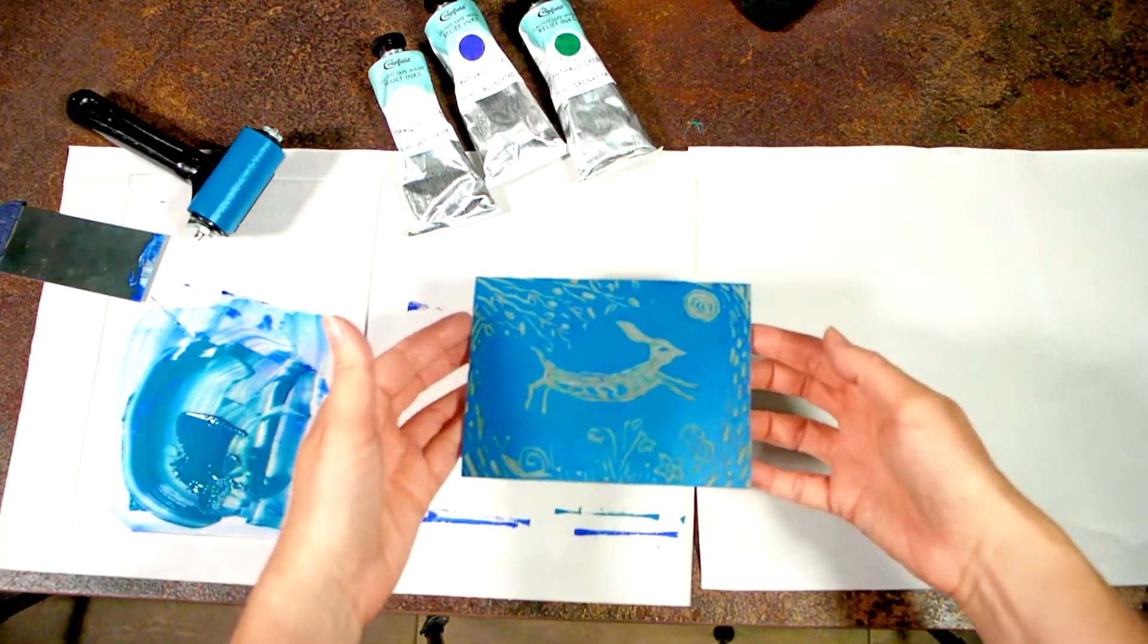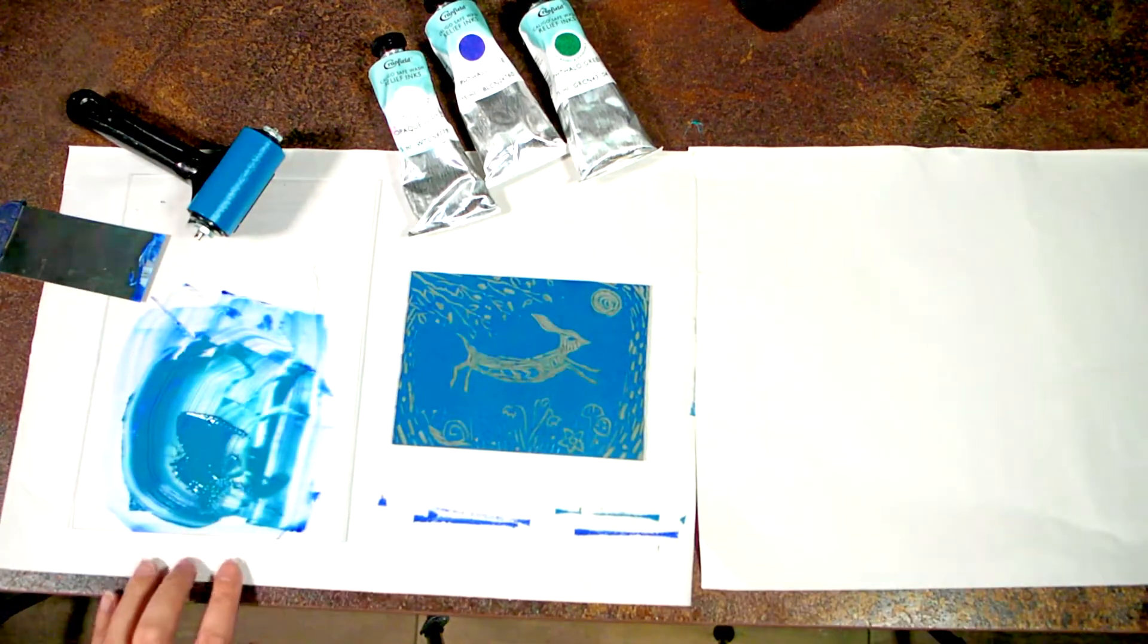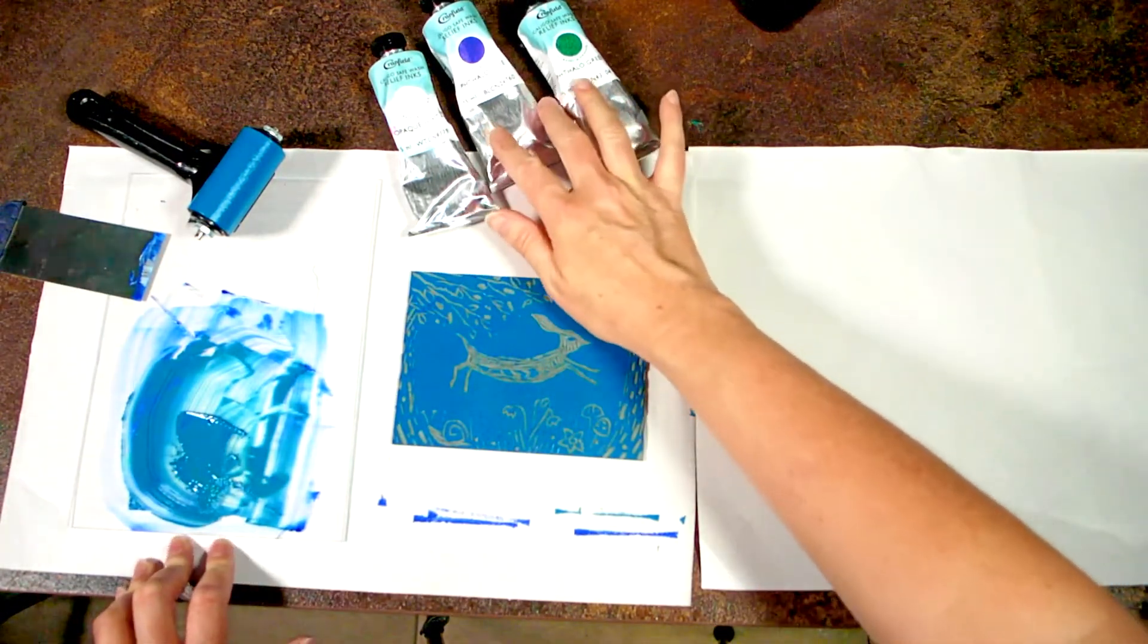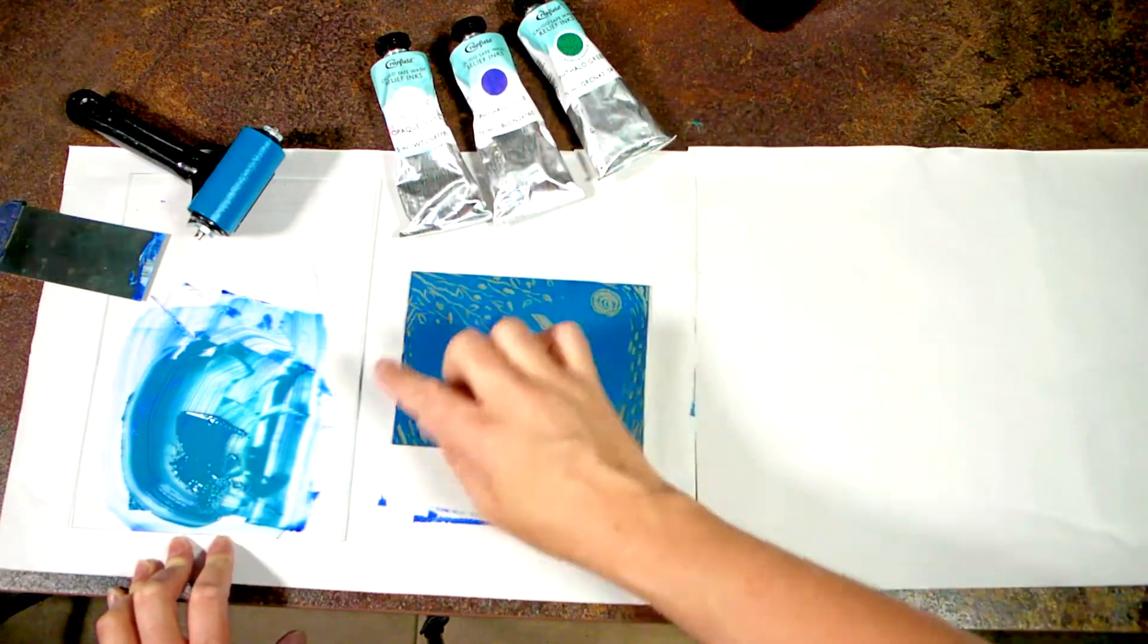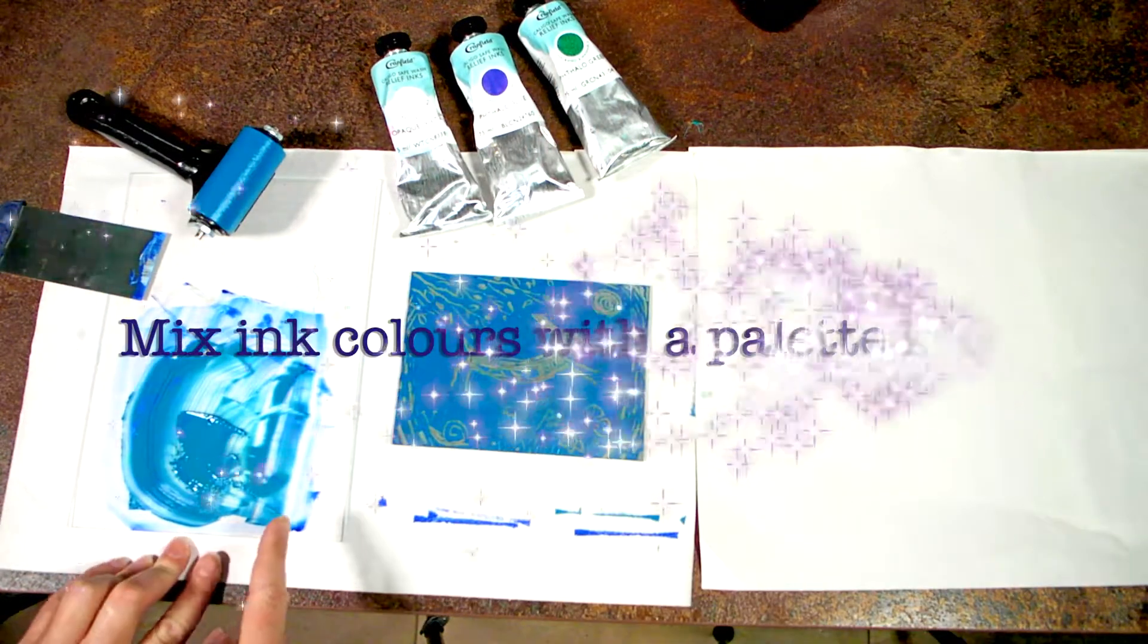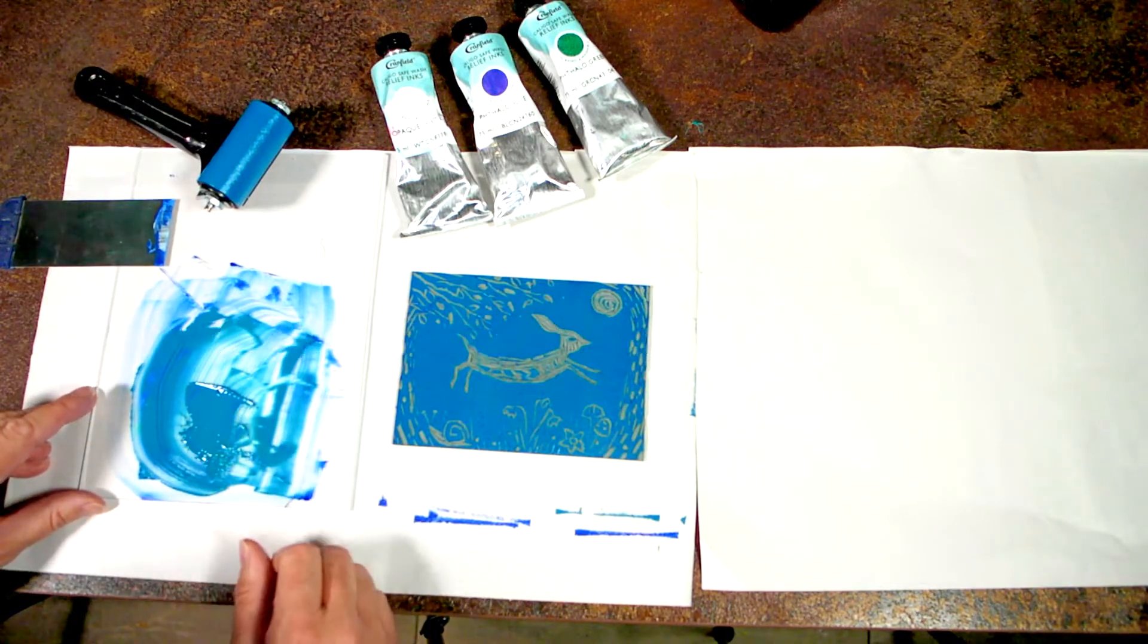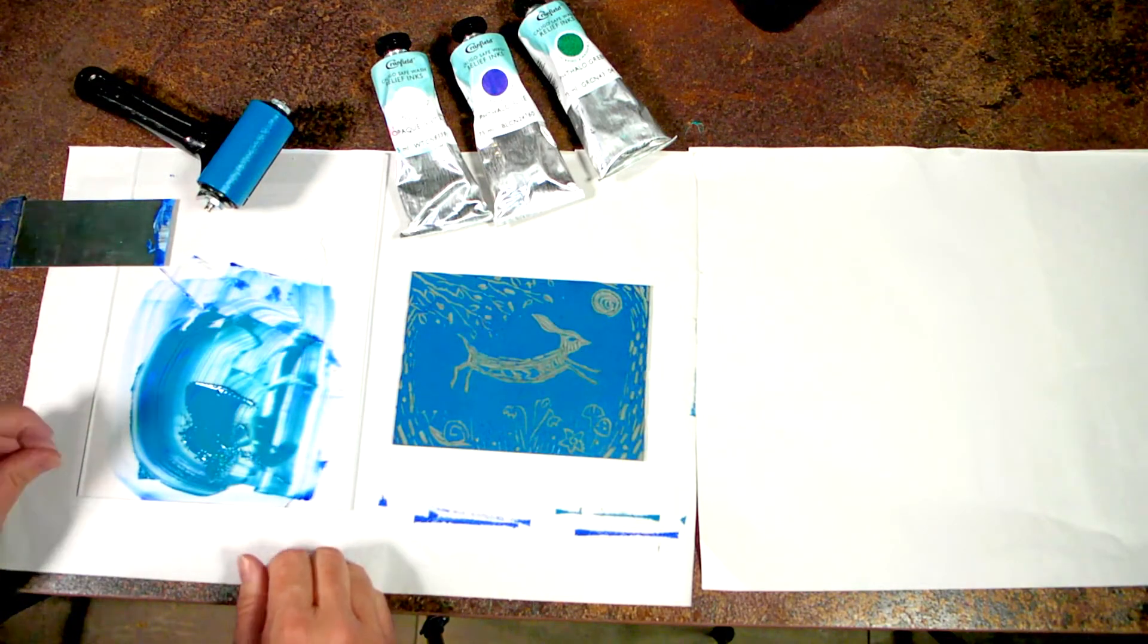I've got my print plate and I've prepared my ink. I've mixed Cranfield Caligo Safe Wash blue, white, and green to produce this really nice teal, turquoise color, which is quite popular at the minute.